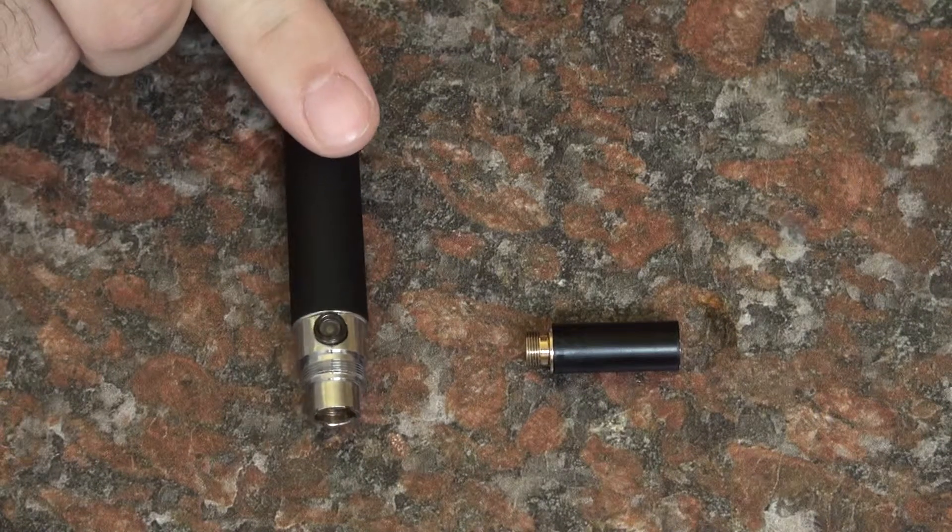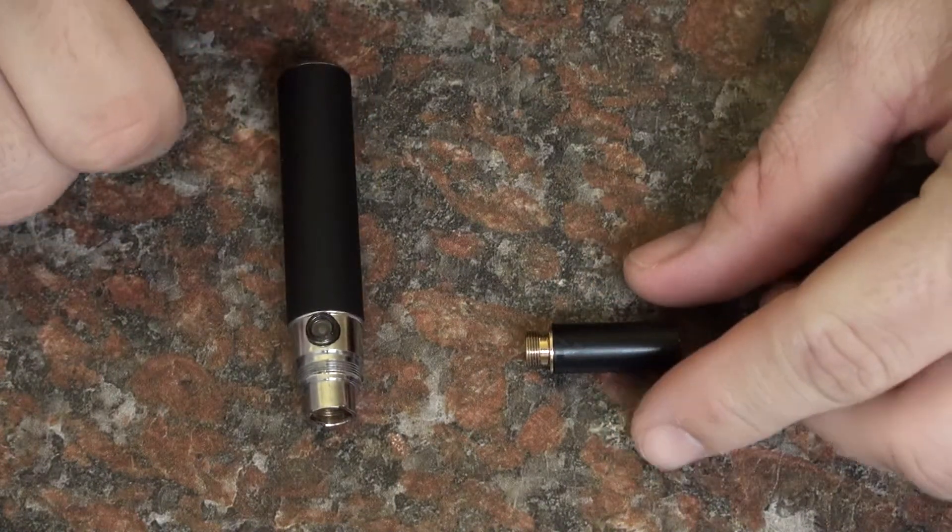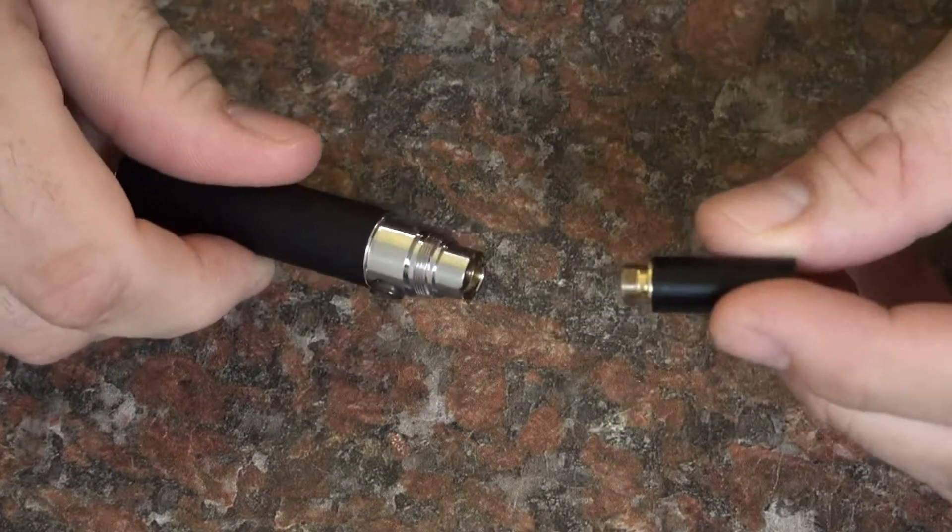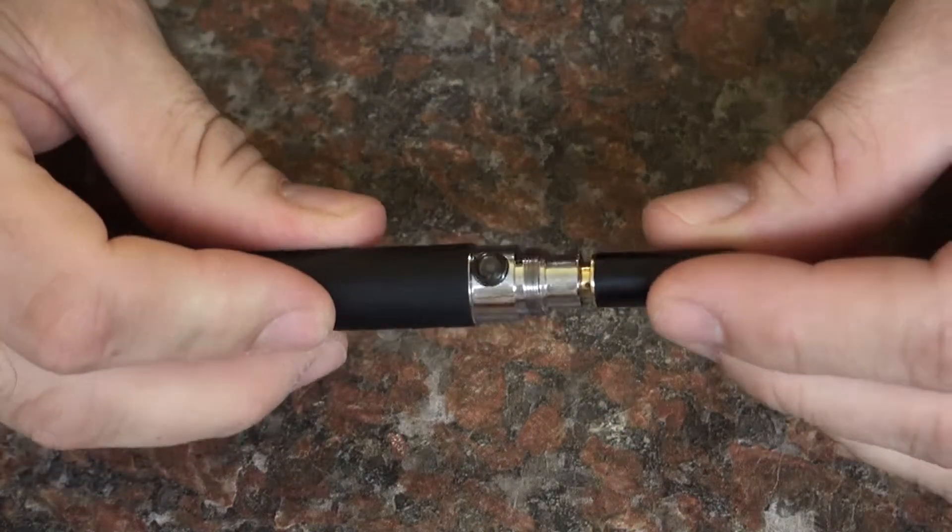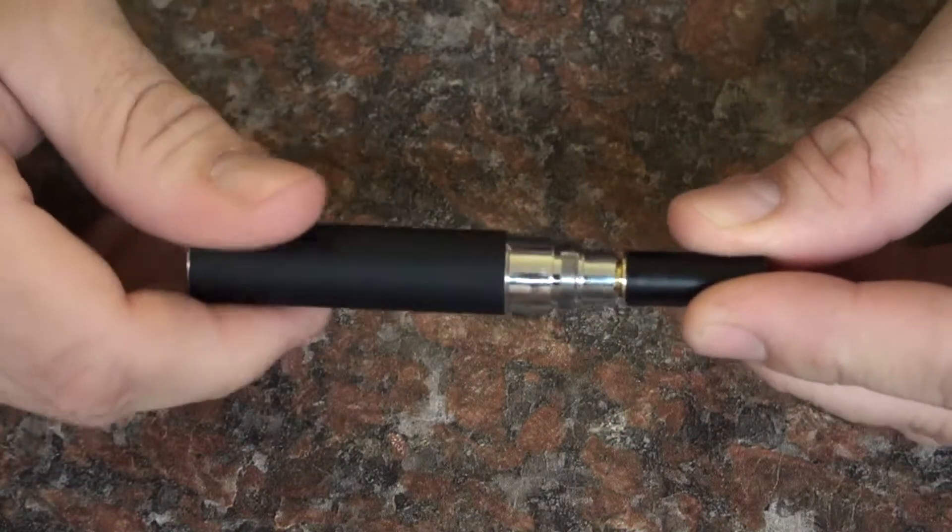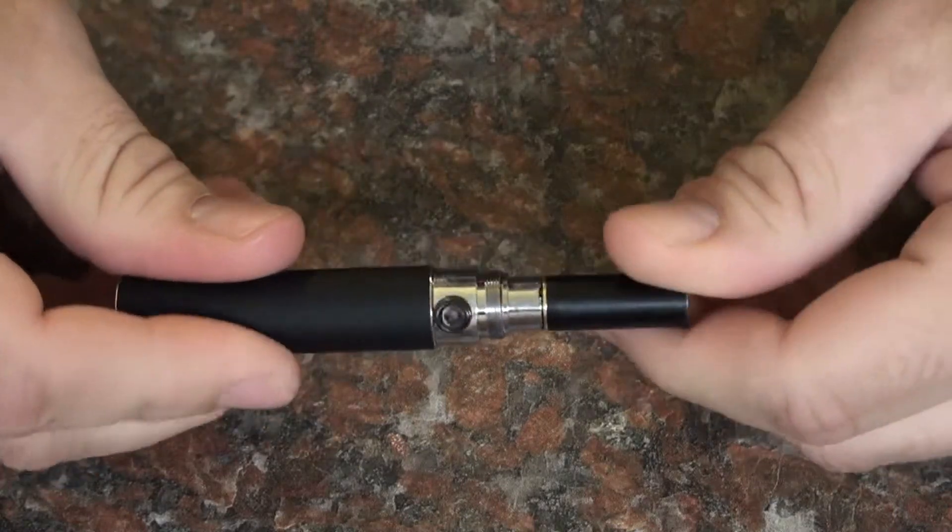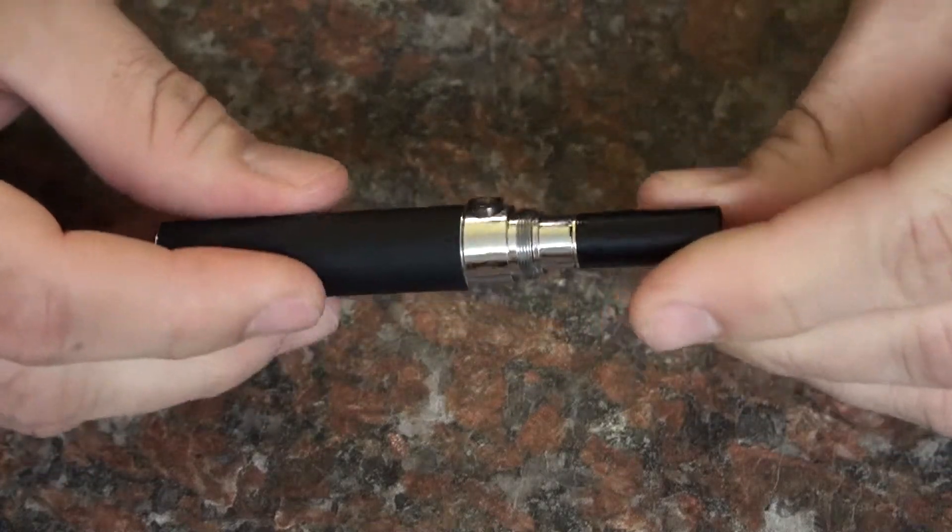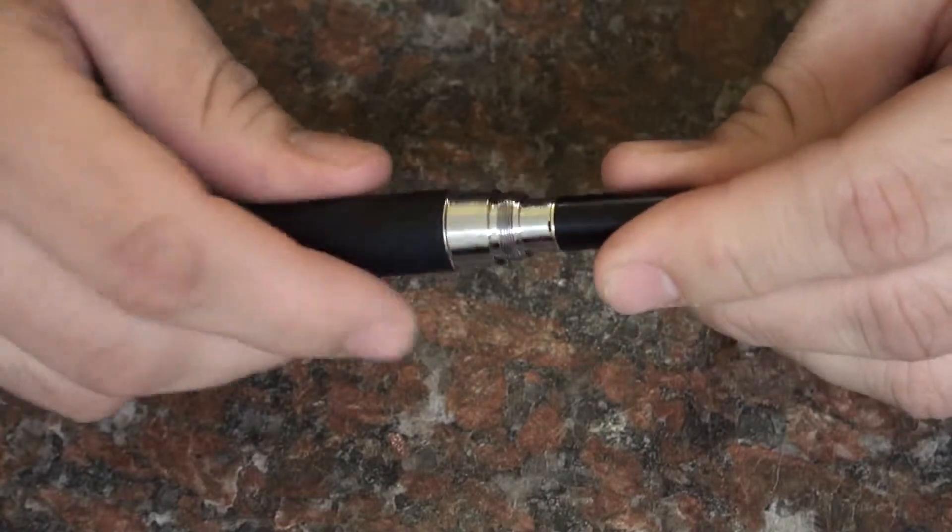First take your fully charged Ego Megasig battery and atomizer. Thread the atomizer's male end into the female end of the battery and tighten until snug.